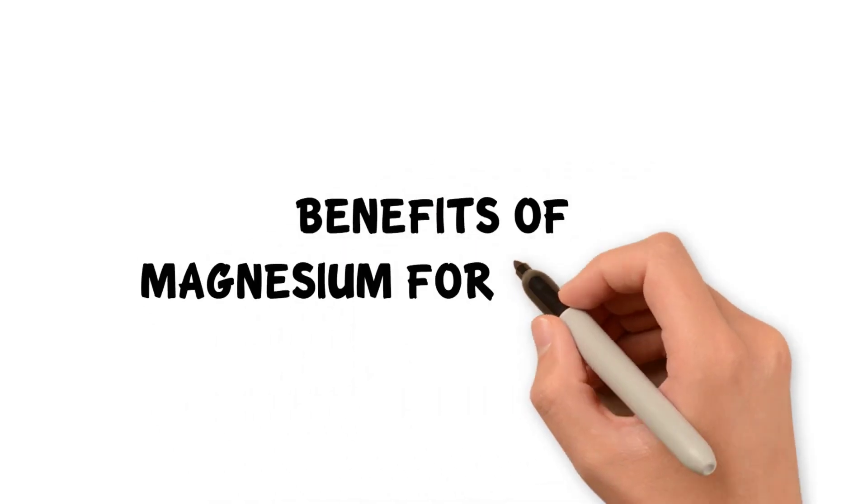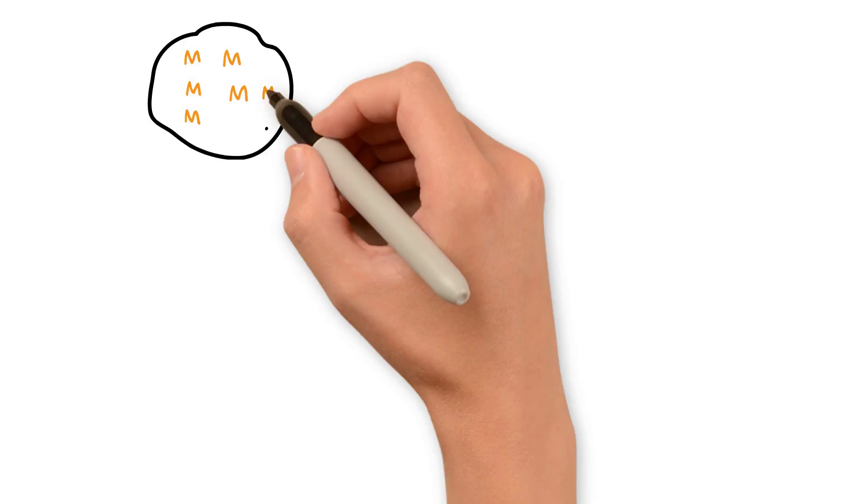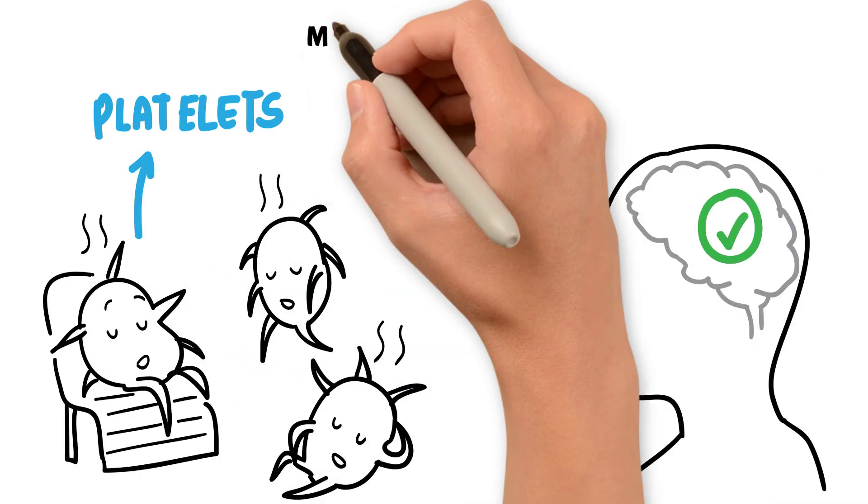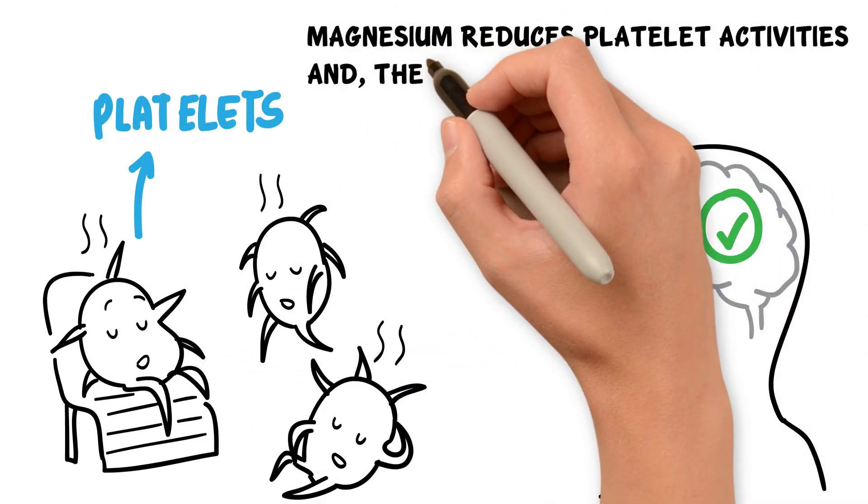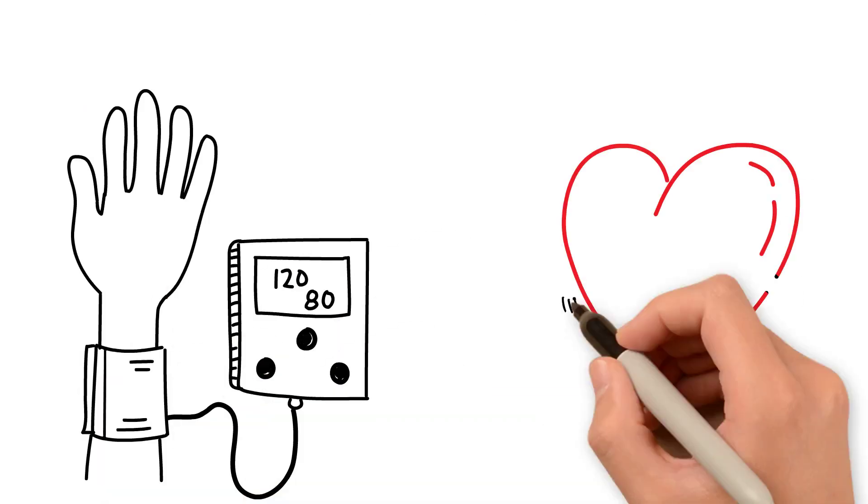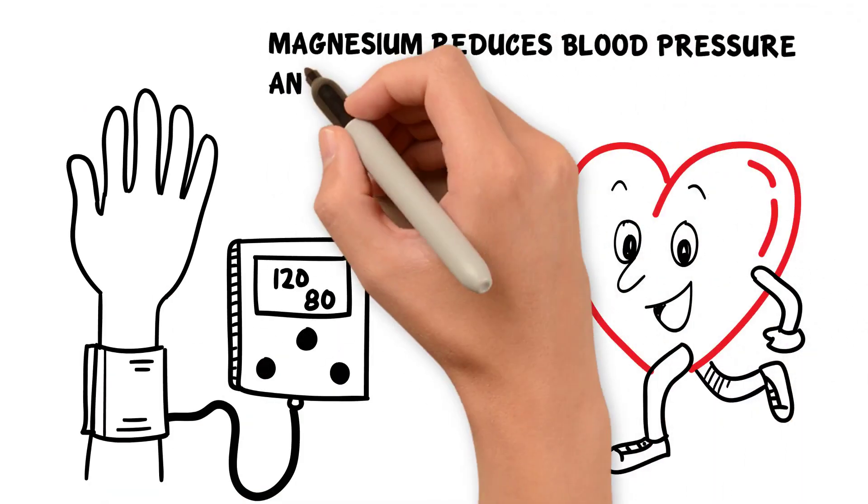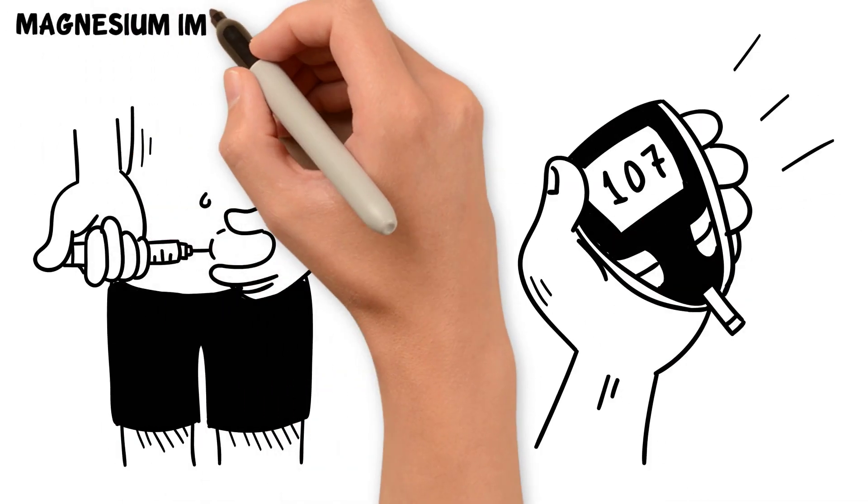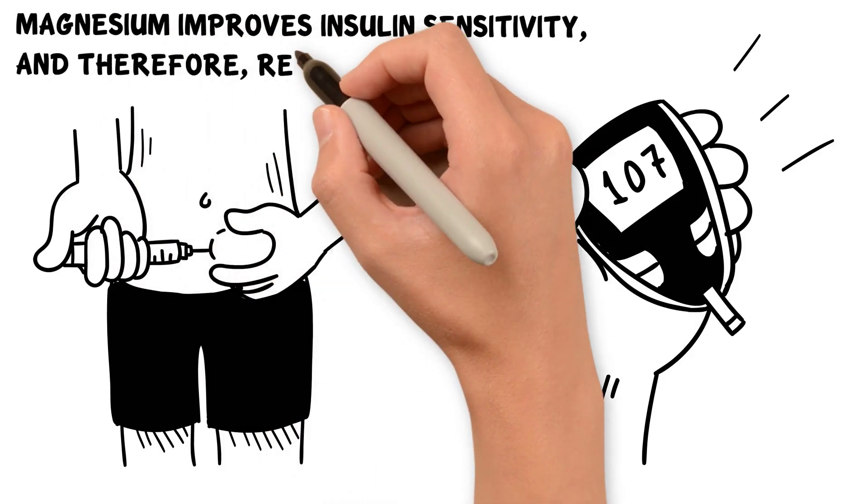Benefits of Magnesium for Diabetics. Dietary magnesium increases the intracellular levels of free magnesium. Magnesium reduces platelet activities and therefore impairs blood clotting to reduce the risk of stroke. Magnesium reduces blood pressure and therefore reduces the risk of cardiovascular diseases. Magnesium improves insulin sensitivity and therefore reduces blood glucose levels.